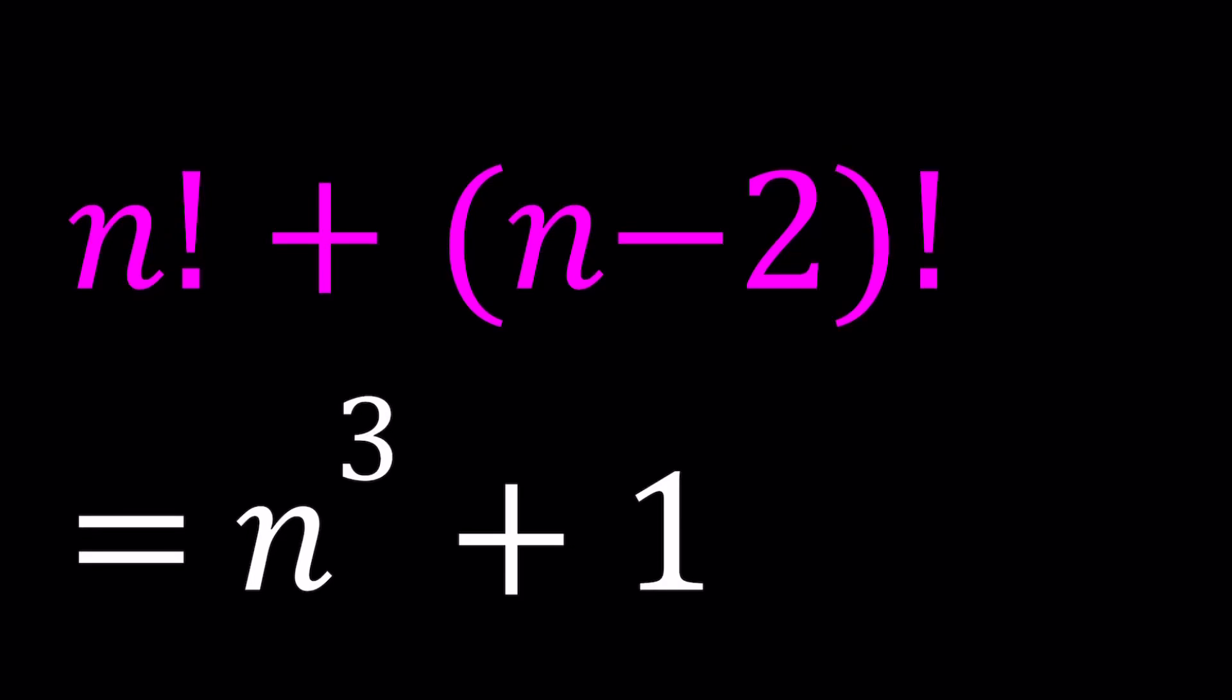Hello everyone. In this video, we're going to be solving a very nice factorial equation. We have n factorial plus n minus 2 factorial equals n cubed plus 1, and we're going to be solving for n values. n is an integer - actually a non-negative integer, so the smallest n can be is 0.